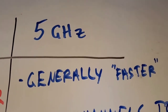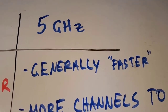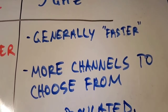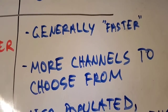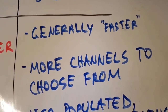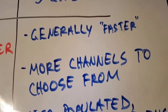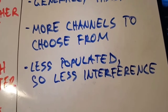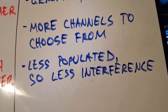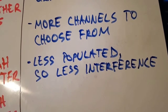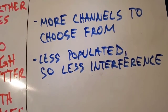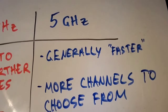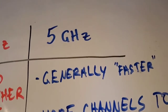The 5 gigahertz band is generally faster and has more channels to choose from, meaning you can have more routers in the same area without them interfering with each other. It's also less congested — there are fewer devices using the 5 gigahertz band compared to 2.4 gigahertz, so there's less interference.